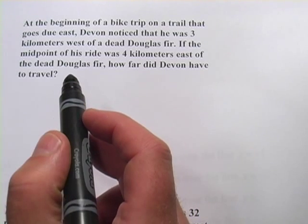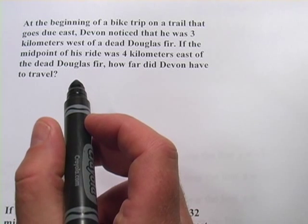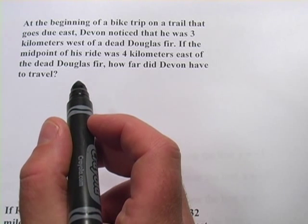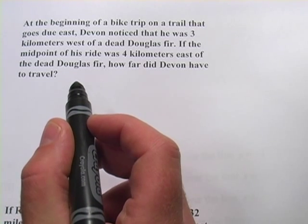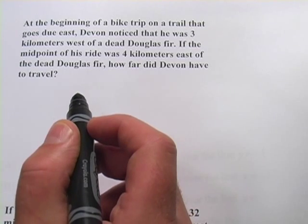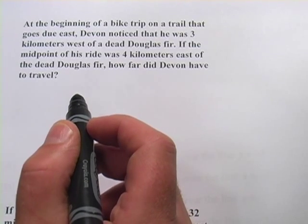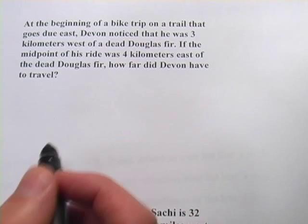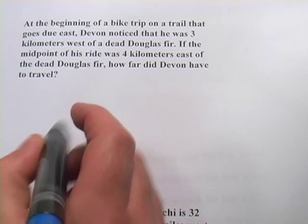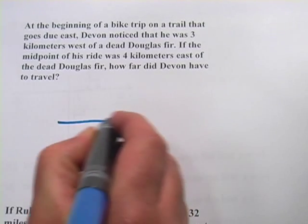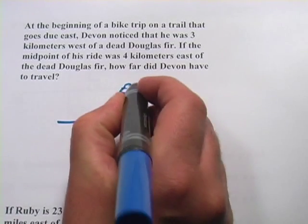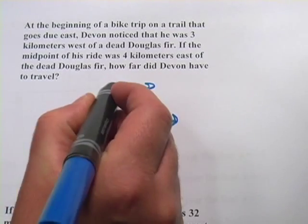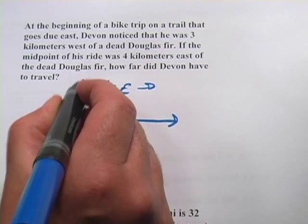It says, at the beginning of a bike trip on a trail that goes due east, Devin noticed that he was three kilometers west of a dead Douglas fir. So we've got a bike trail that goes east — east this way, west this way.